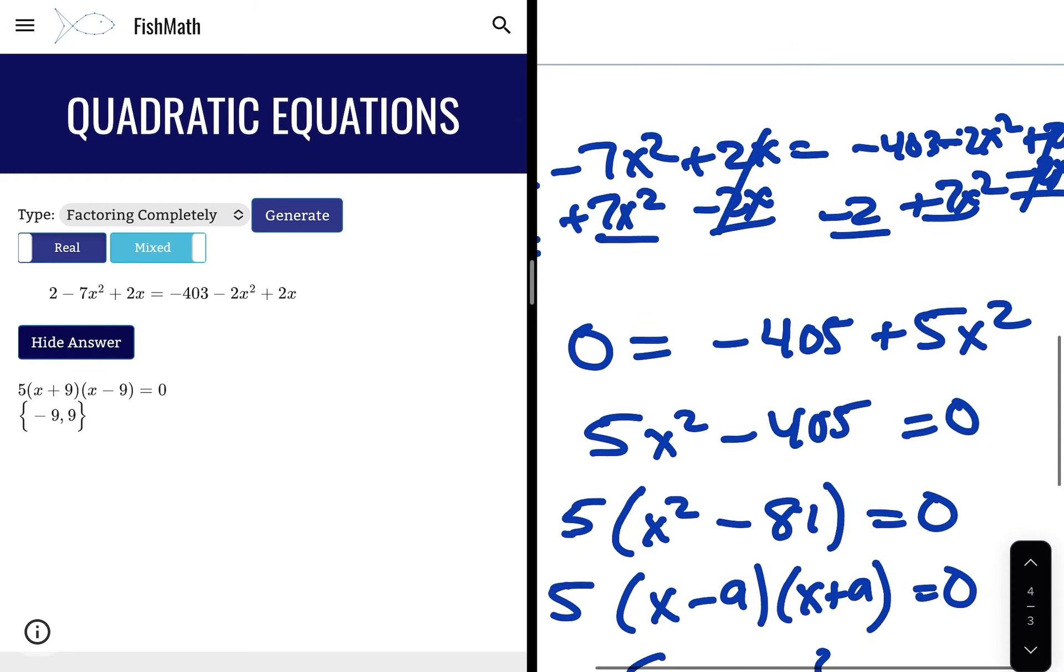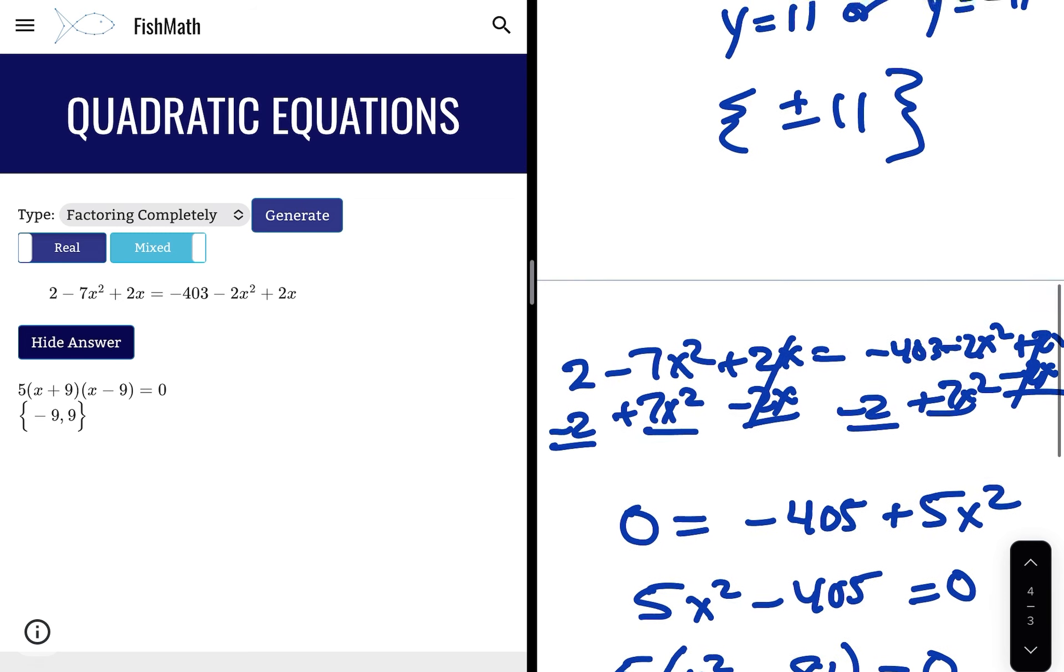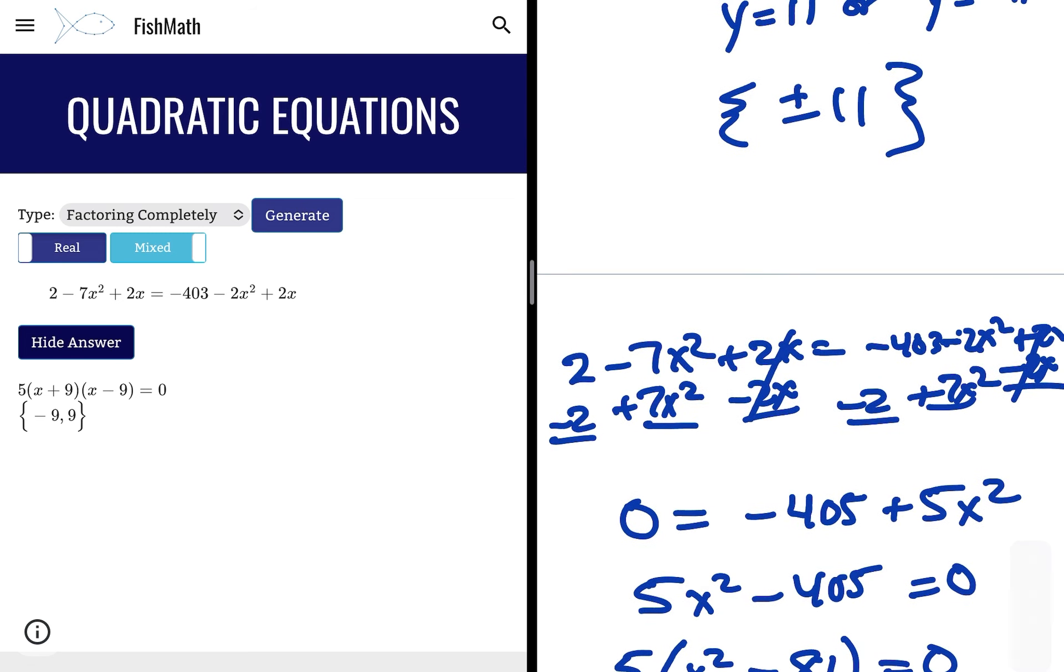So a little more complicated examples. Look for the GCF first, always. If you can take that out first, that always helps. If you don't have it equal to 0, obviously we've got to get equal to 0 first. And then just do our factoring like we used to.